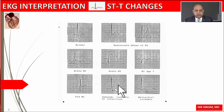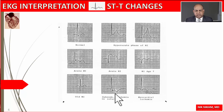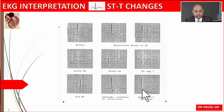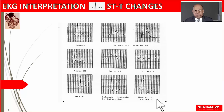If the ST segments remain elevated six weeks after an acute MI, we should consider the possibility of a left ventricular aneurysm. We may also see horizontal ST depression in groups of leads representing subendocardial ischemia. If associated with elevated cardiac enzymes, this may represent non-transmural MI. Similarly, symmetrically inverted T waves in multiple leads may represent left ventricular global ischemia or NSTEMI.